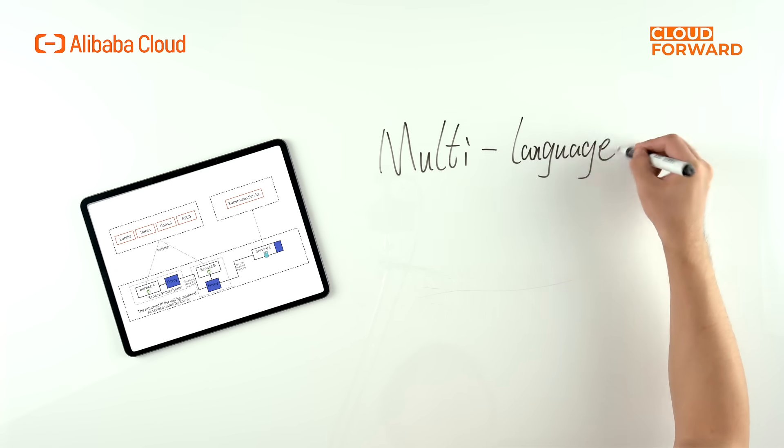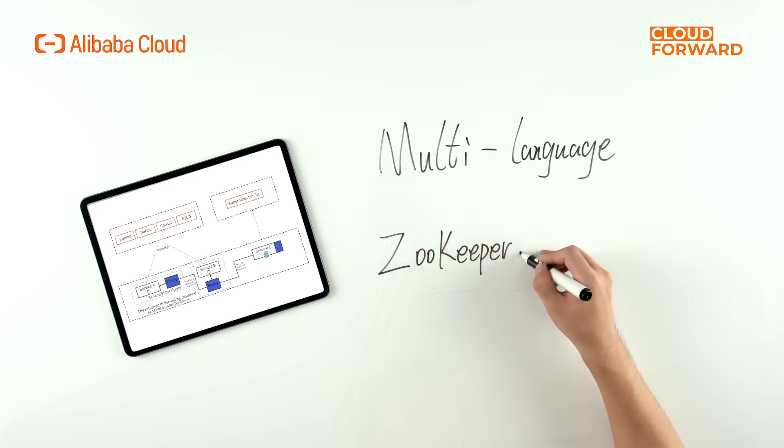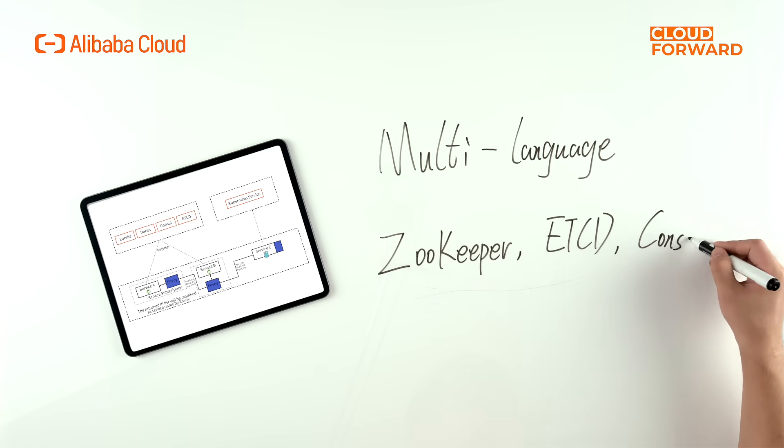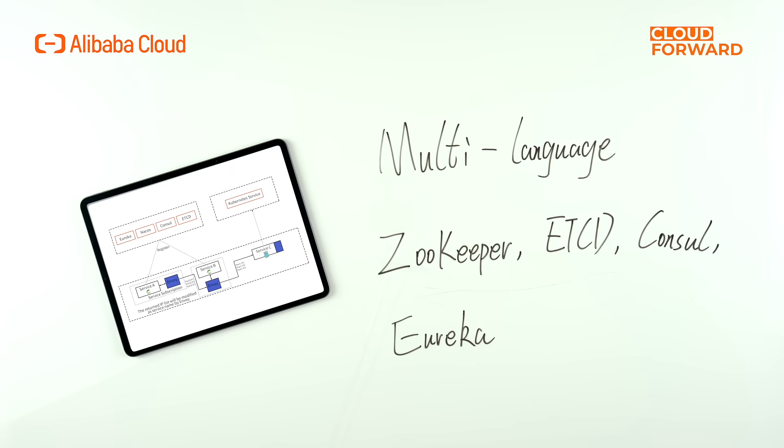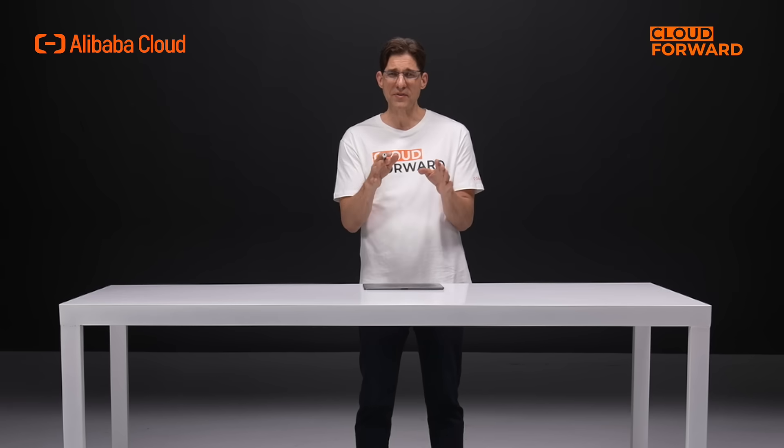ASM provides multi-language, multi-framework microservice management and supports microservice applications that use not only Kubernetes service for service discovery but also registry centers like Zookeeper, etcd, Consul, and Eureka. ASM's enhanced capabilities guarantee that your legacy applications can benefit from ASM's rich management capabilities without the need to modify the code and while retaining the registry.